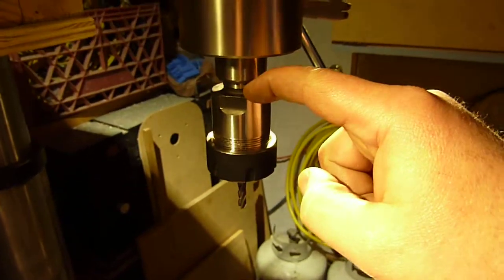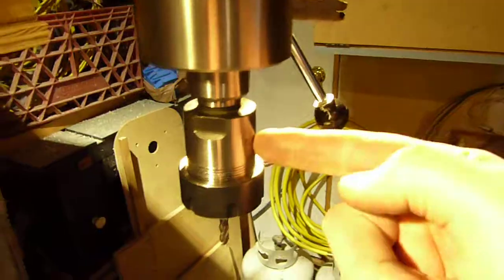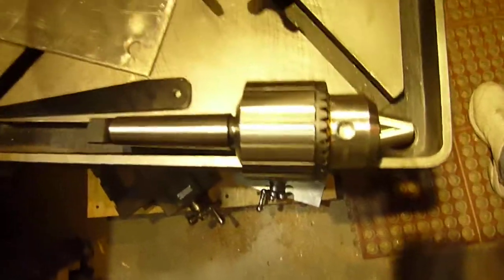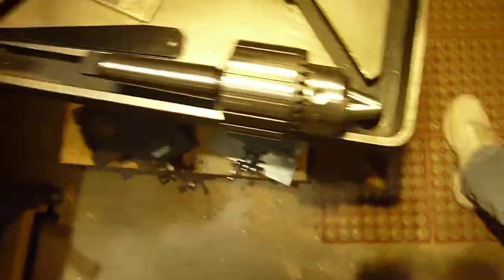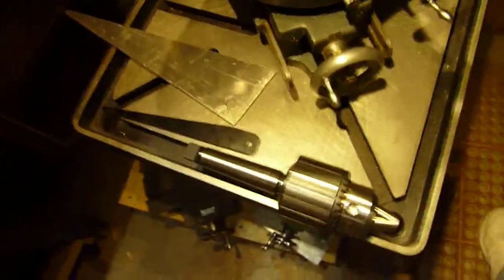Anyway, the question is, how do you get your taper to stay in there without just totally beating on it? I want to be able to take this out and put that in its place or another drill chuck, interchangeably, at will. Obviously, the right answer is a drawbar.